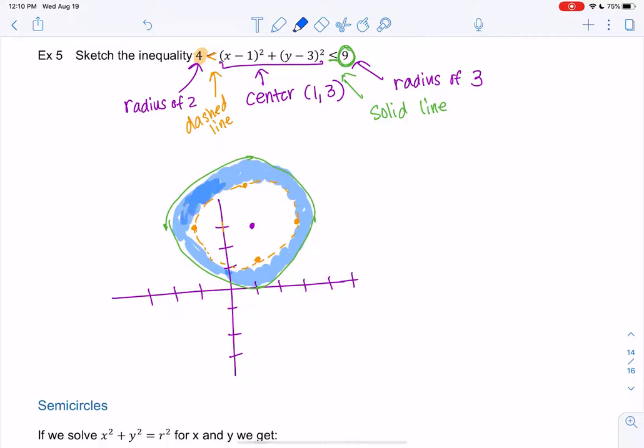And hopefully yours looks more circular than mine. But it should be like a washer, right, nice, that shape. A circle with a hole in the middle. So that's what the inequality looks like.